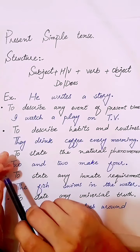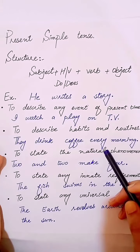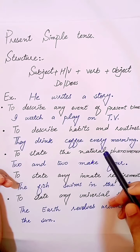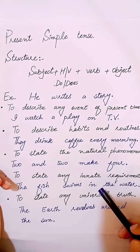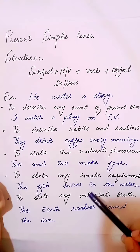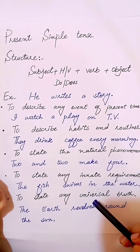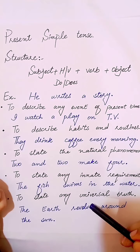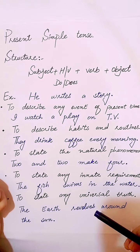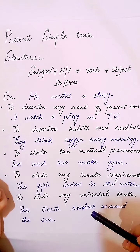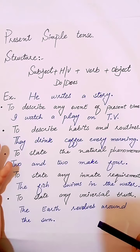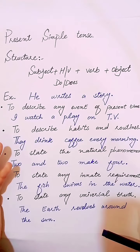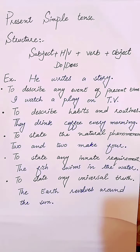The example of this use is: 'I watch a play on TV.' The second use is to describe habits and routines, like 'They drink coffee every morning.' Third is to state natural phenomena, like 'Two and two make four.' The fourth use is to state any innate requirement, like 'The fish swims in the water.' The next use is to state any universal truth, like 'The earth revolves around the sun' or 'Water boils at 100 degrees Celsius.' Present simple also talks about facts about people or things in the world.